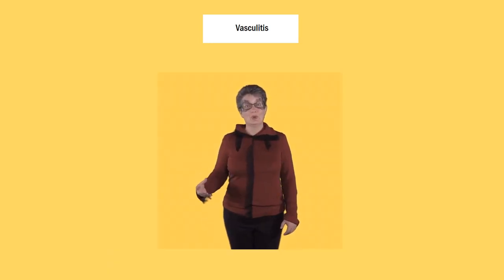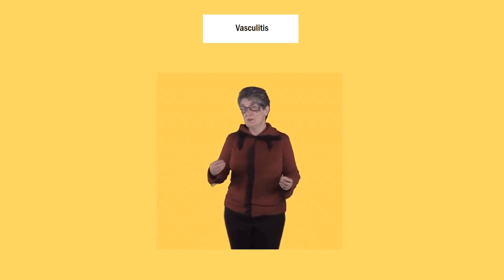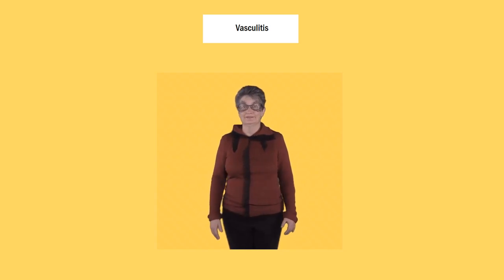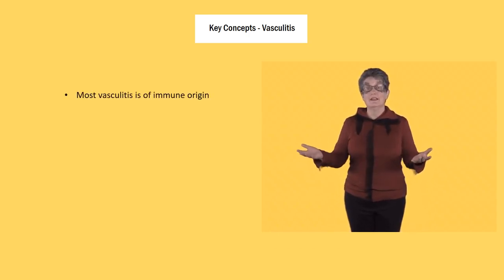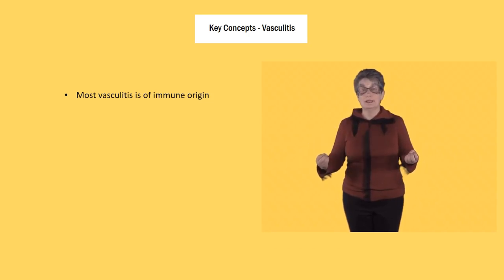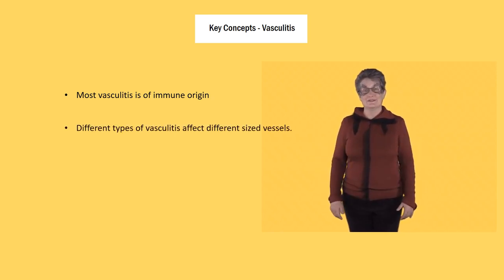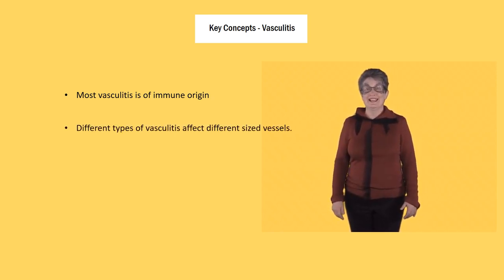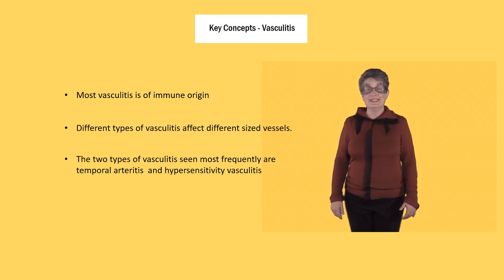Finally, in this segment we're going to think about vasculitis. There are a couple of common types we need to know about and many rarer kinds. Key concepts: most vasculitis is of immune origin — the vessels are injured by immunoglobulins depositing in the walls and activating complement. Different types of vasculitis affect different sized vessels. The two types seen most frequently are temporal arteritis and hypersensitivity vasculitis.